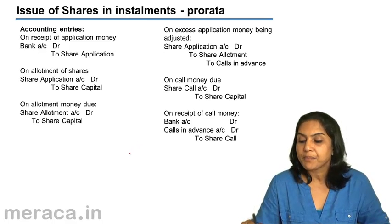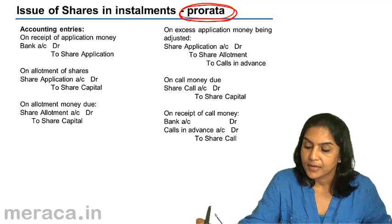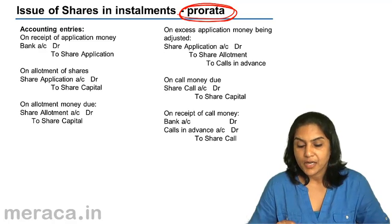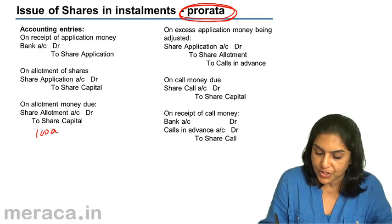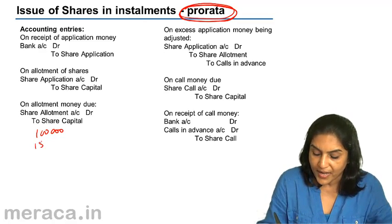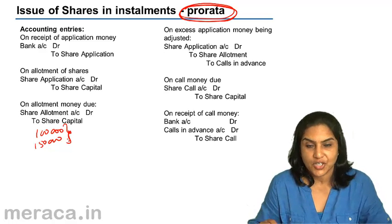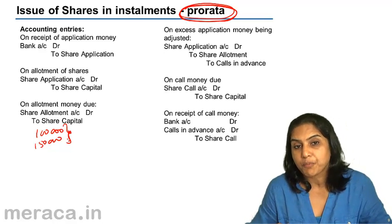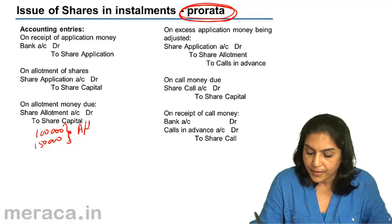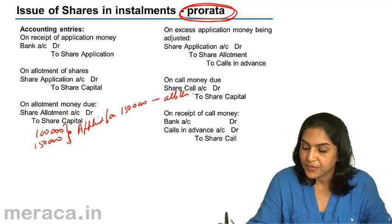Issue of shares in installments and pro-rata. Pro-rata means allocating shares proportionately. Suppose a company makes an issue for 1 lakh shares, but share applications are received for 1 lakh 50,000 shares. The directors may go through the applications — it's possible they may reject some — but it is also possible that they decide to allot the shares proportionately. If you applied for 1 lakh 50,000 shares, you will be allotted only 1 lakh shares.